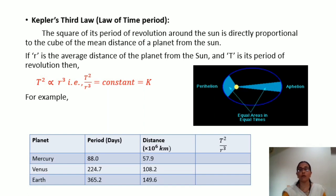Kepler's third law. The square of its period of revolution around the sun is directly proportional to the cube of the mean distance of a planet from the sun. What do you mean by period of revolution? The period of revolution is the time taken by the planet to complete one revolution around the sun. So, let's take an example of earth. The period of revolution of earth around the sun is 365.2 days.